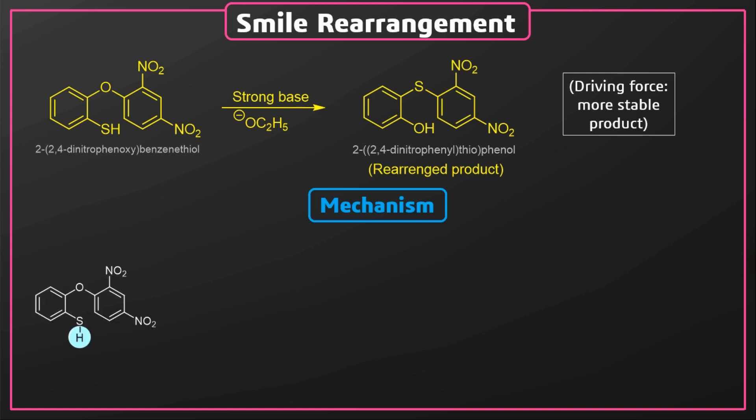Now we are going to discuss the mechanism of this rearrangement. In the presence of a strong base, the acidic hydrogen atom is removed and an anion is formed. This anion acts as a nucleophile and attacks the highly electron-deficient carbon atom of the benzene ring, and nucleophilic addition takes place.